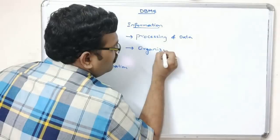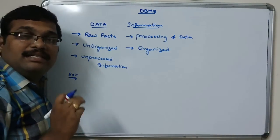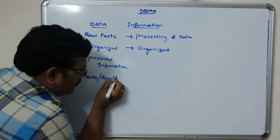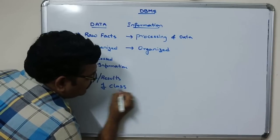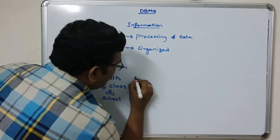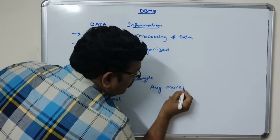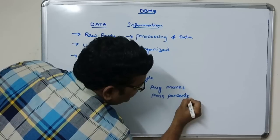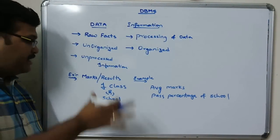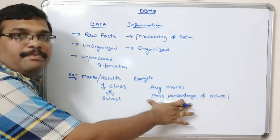After processing, the data will be in an organized fashion. For example, if a class consists of 60 students, the marks or results — the complete class, school, or college — comes under data. The average marks or the pass percentage of a school or college is called information. So after processing the data we get the information.